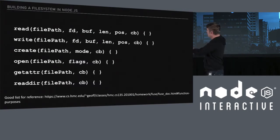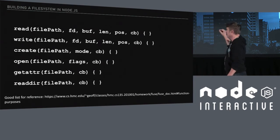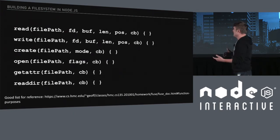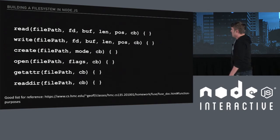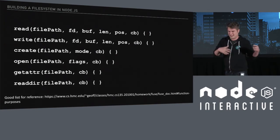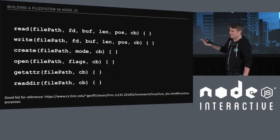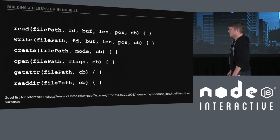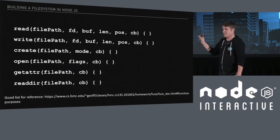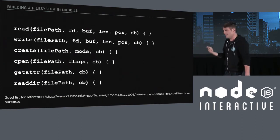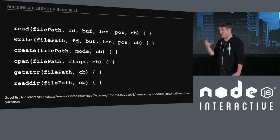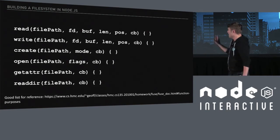A couple of key methods that FuseBindings expects — these map one-to-one to the libfuse C library. Read and write, of course — you need to get data in and out of specific files, and it's buffer-based, so these are Node.js buffers. Then we have create, open, and readdir which provides a list of files. I want to take a brief aside on getattr — that's getting the metadata for a specific file: the size, who owns it, when it was created, when it was last modified. It's the very critical metadata that belongs to every file on a Unix system, and it gets called a lot.